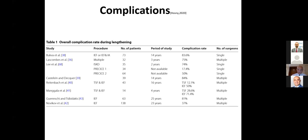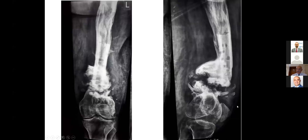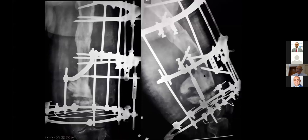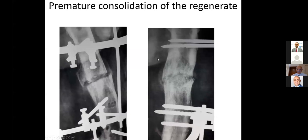Complications: we have numerous complications including pin tract infection, poor regenerate formation, premature consolidation, axial malalignment. For example, this patient with subcondylar non-union: corticotomy with bone transport, compression and lengthening — non-union in the distal part with premature consolidation of the regenerate. Complications can happen in any case.